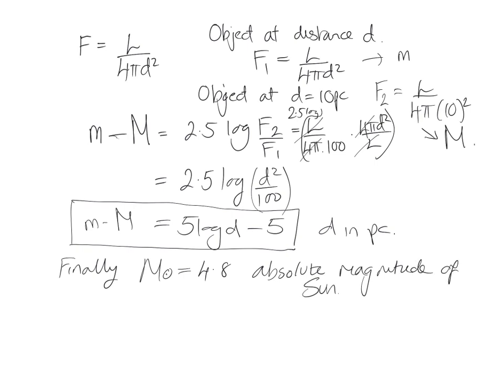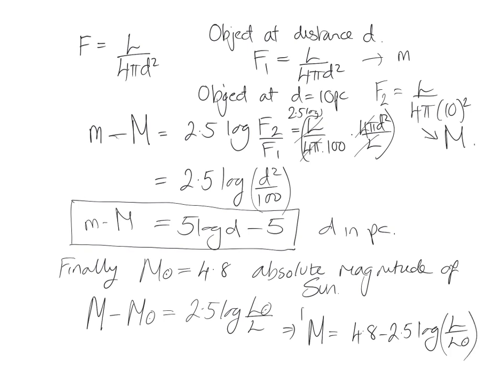So if we put that into our equation for the difference between two magnitudes, the absolute magnitude of a star minus the absolute magnitude of the sun is 2.5 times the log of the luminosity of the sun divided by the luminosity of the star. Or if we rearrange into a more useful order, the absolute magnitude of a star is 4.8 minus 2.5 times the log of the luminosity of the star as measured in solar luminosities. Another useful one.